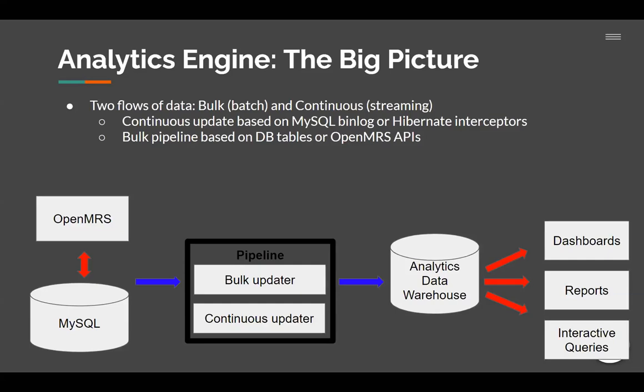So the current prototypes — in the streaming case, they can work based on MySQL bin logs or Hibernate interceptors. But we have heard from people that the bin log way and Debezium is actually preferred, so we will probably completely switch to that. And the bulk pipelines that we have right now can work off of directly the DB tables or the APIs in OpenMRS. But it's probably more likely to eventually be mostly based on the database itself directly.